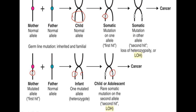This is how retinoblastoma is found to cause cancer in both the familial forms and also in the sporadic forms. With this we come to a conclusion of this tumor suppressor gene topic. In the next video we will be discussing about another tumor suppressor gene, that is P53. Thank you.